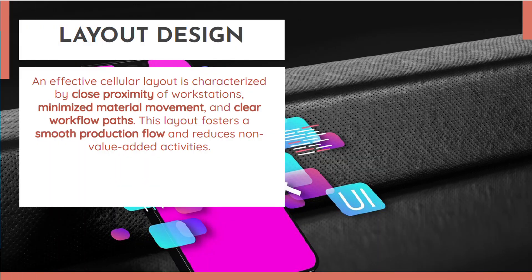Next we will study the different layouts, which are very important in this lean tool. An effective cellular layout is characterized by close proximity of workstations. All workstations should be designed so that they are close to each other, which ensures minimum material movement and a clear workflow path. This layout fosters smooth production flow and reduces non-value-added activities.